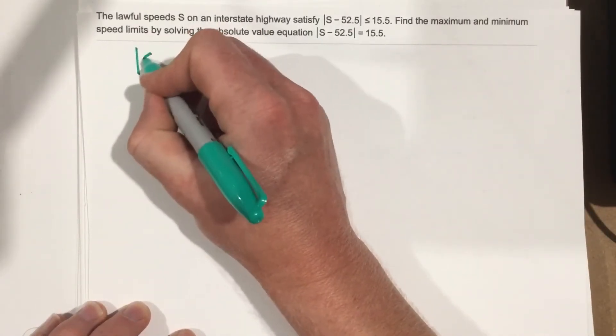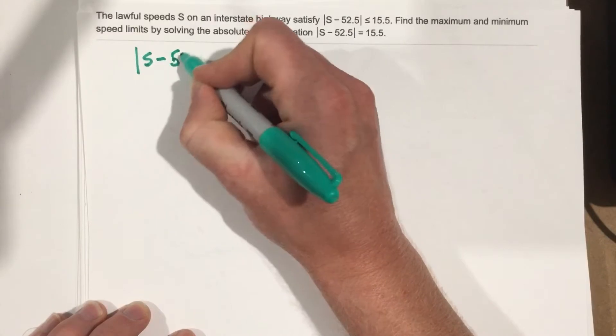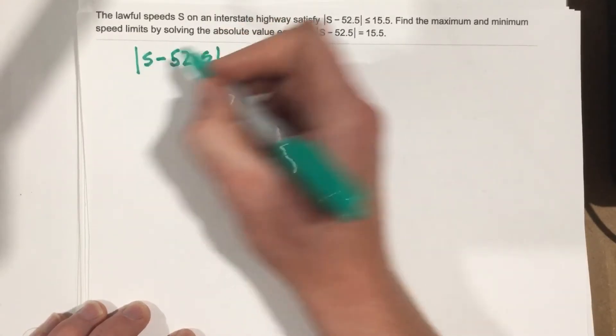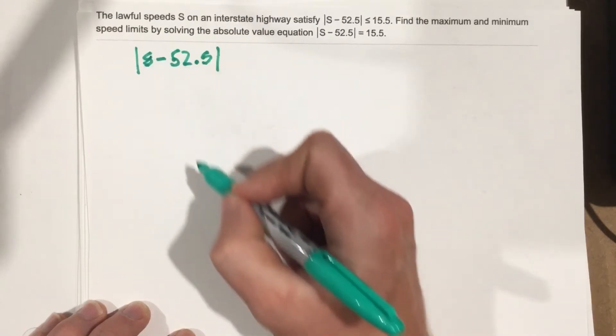ahead and write that out. Absolute value of s minus 52.5. My s looks like a five, so I'm going to put a line through there.